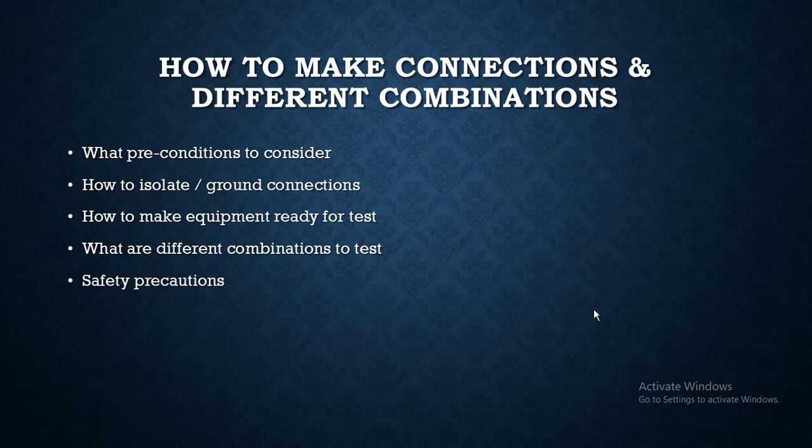In this section we will study how to make connections and different combinations. For example, if you want to do testing of a cable, how you can start and what are the conditions that you need to apply. We will check the three conditions: the requirement of isolation, how you have to isolate, how to ground, how to make equipment ready for testing, what are the different combinations to test, and the safety precautions.